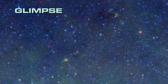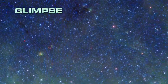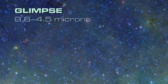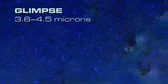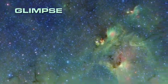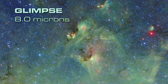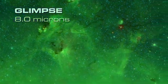The Glimpse part of the survey includes the shorter infrared wavelengths. At 3.6 and 4.5 microns, we see blue stars that, in visible light, are completely hidden by dust. Carbon-based dust molecules show up at 8 microns, represented as green.